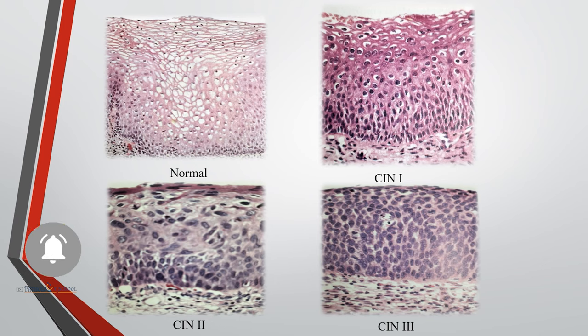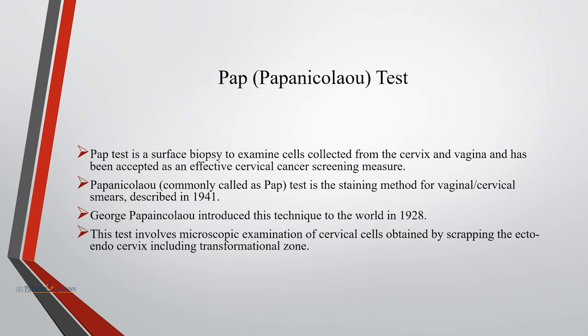To reduce mortality from cervical cancer, cytological screening by pap smear came into existence. This is the pap test or Papanicolaou test, named after George Papanicolaou who introduced this technique to the world in 1928. The pap test is a surface biopsy to examine cells collected from the cervix and vagina, accepted as an effective cervical cancer screening measure. It involves microscopic examination of cervical cells obtained by scraping the ecto-endocervix including the transformation zone.